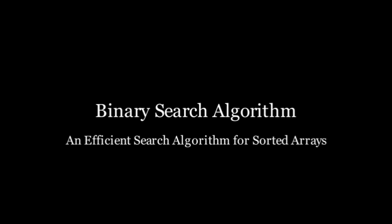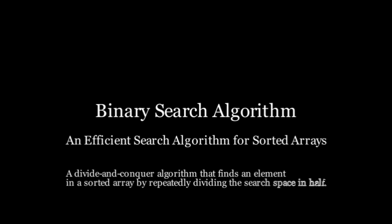It's a super efficient divide and conquer algorithm that helps us find an element in a sorted array by repeatedly cutting its search space in half. Think of it like finding a word in a dictionary. You don't flip through every page, right? You just open it roughly in the middle and keep narrowing it down. That's binary search in action.